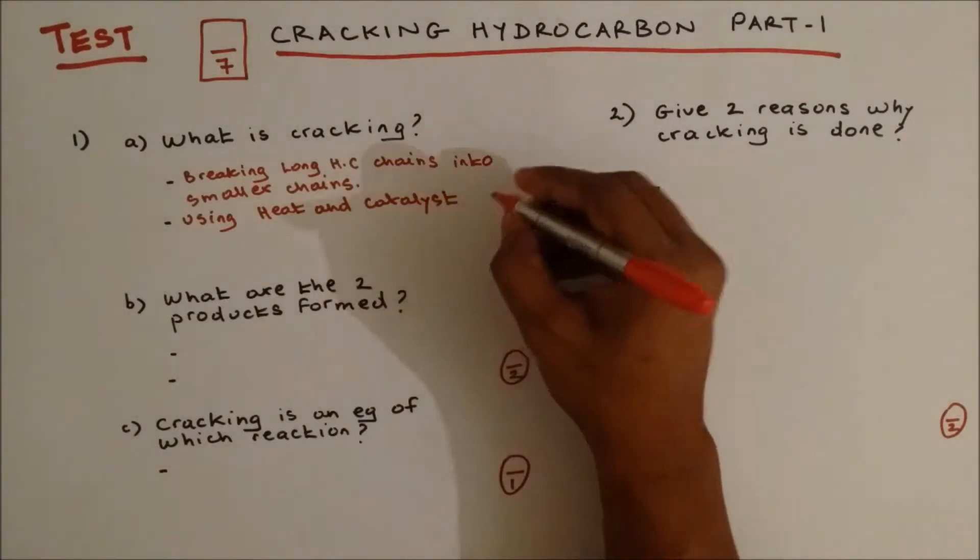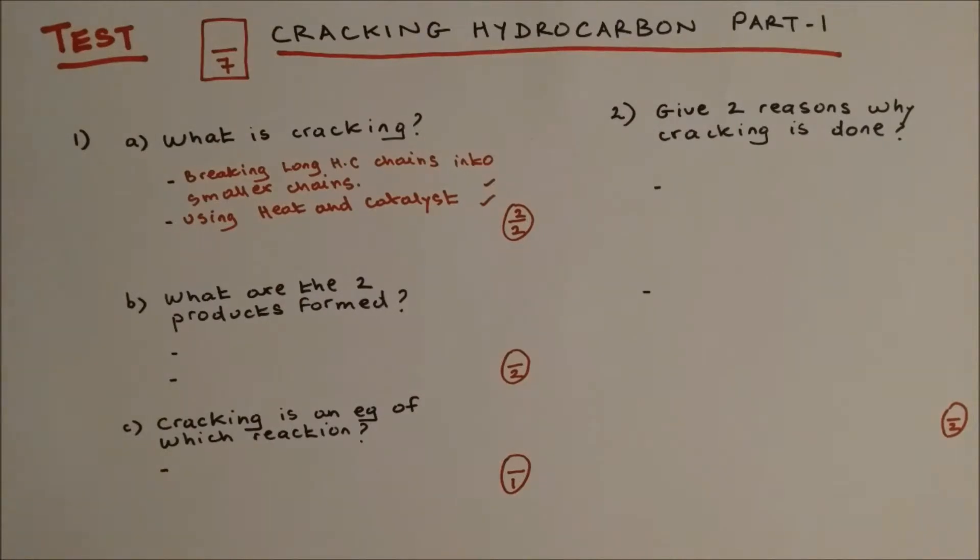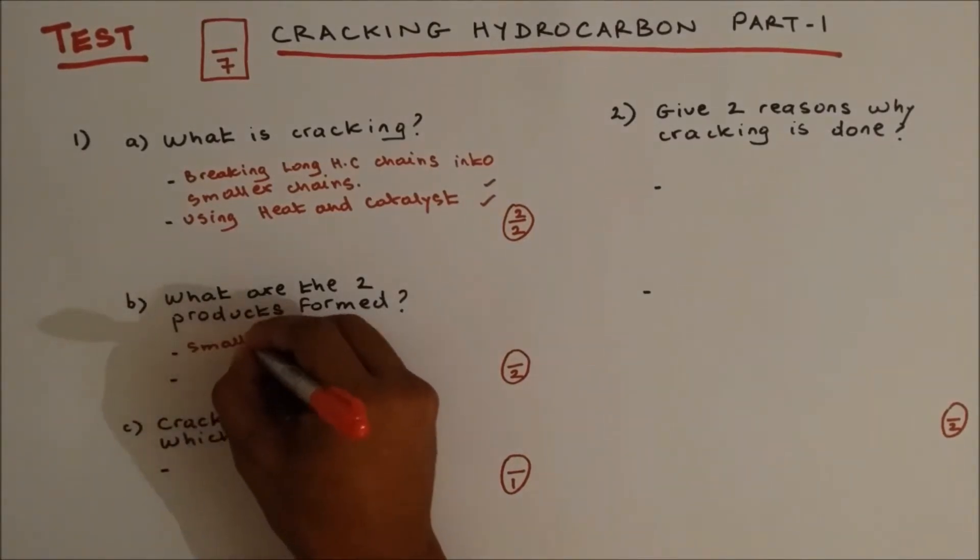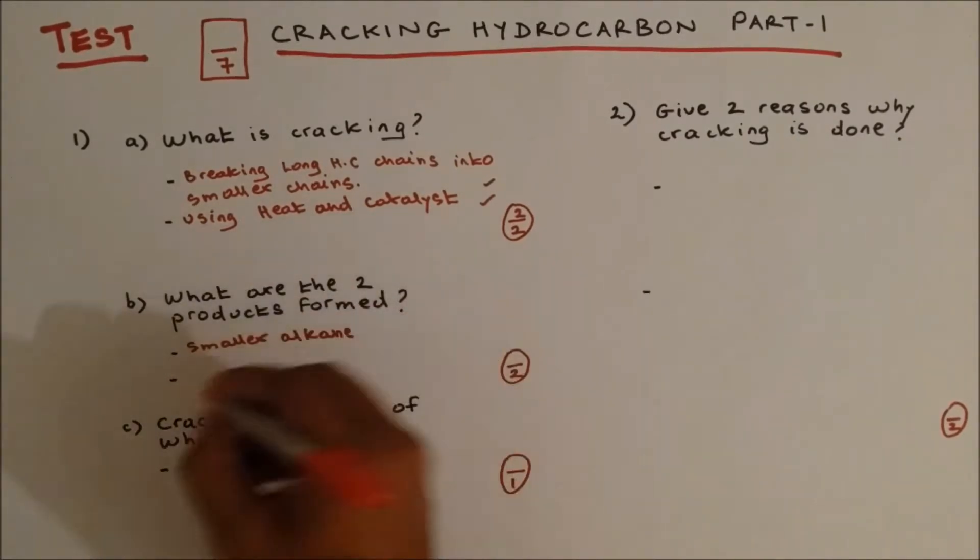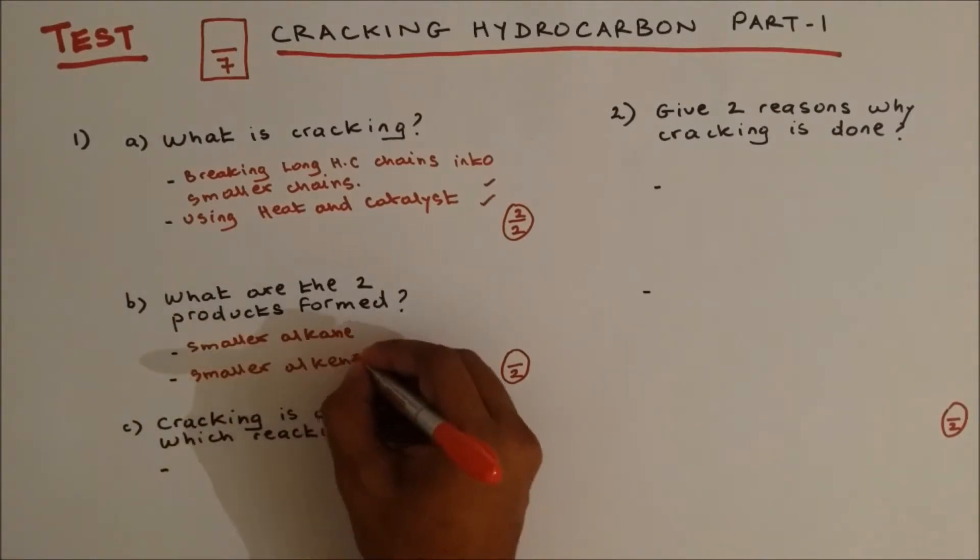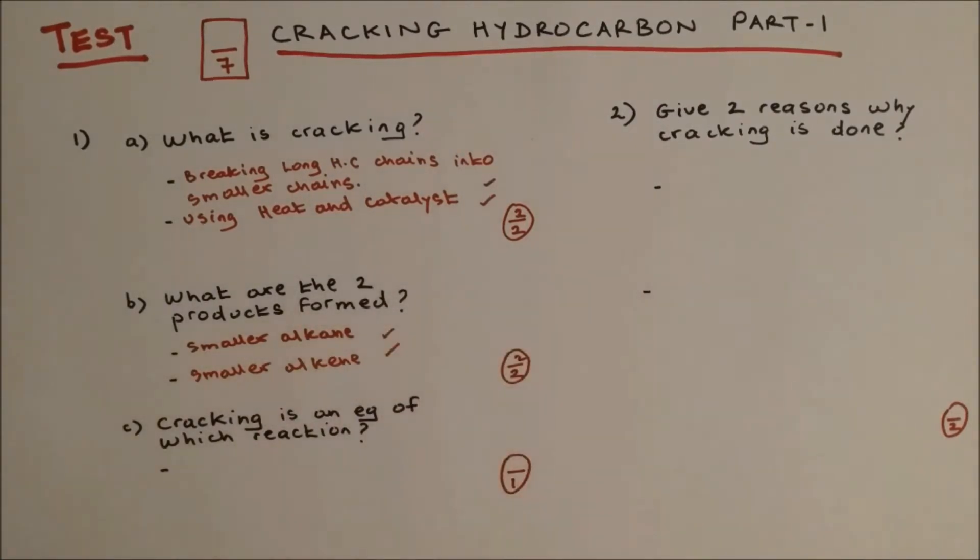Question 1b: What are the two products formed from cracking? The two products are smaller alkane and smaller alkene. Two out of two.